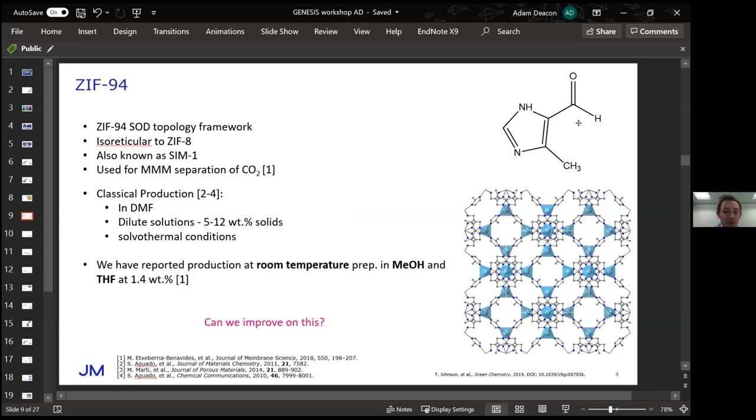Classical production in literature requires use of DMF, which is a very toxic solvent and not very nice to use at large scale. It also uses solvothermal conditions which are difficult to scale up considering the cost required. We've reported the production of this MOF at room temperature using methanol and THF solution at quite low weight percents, but we want to improve this synthesis and increase that concentration.